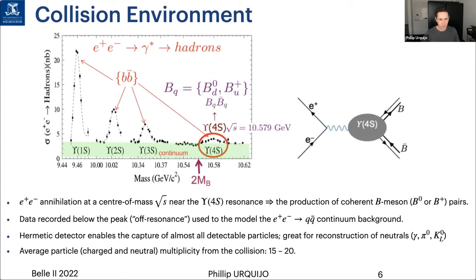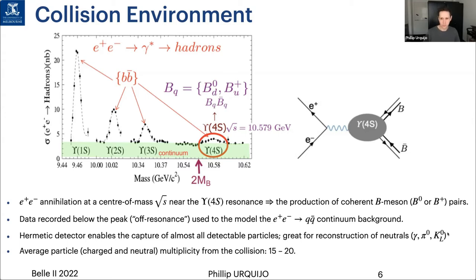Let's look at the collision environment. Most of our data is collected near the Upsilon 4S, which allows us to produce coherent B meson pairs. We also take a little bit of data about 60 MeV below to collect background — very important to suppress and subtract it. The cross-section for continuum production is around four times that of B production, which is why that's so important. Because particles are produced near rest, we want the detector to be hermetic, very good at reconstructing neutrals such as gammas and pi-zeros, and we need to find as many charged particles as possible — tracking efficient down to very low momenta — picking up to 15-20 tracks and neutrals in an event.